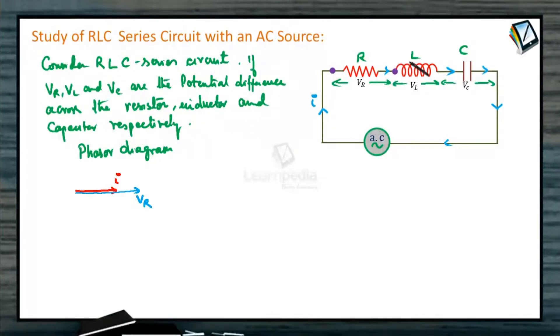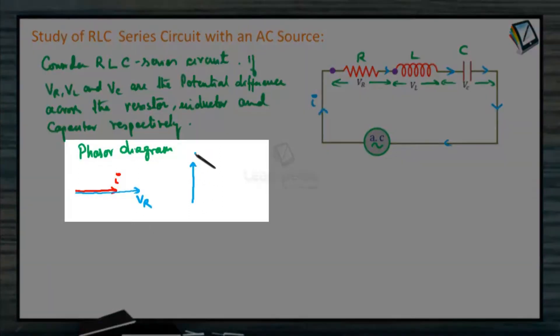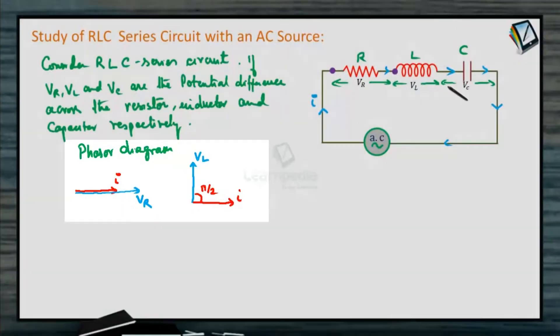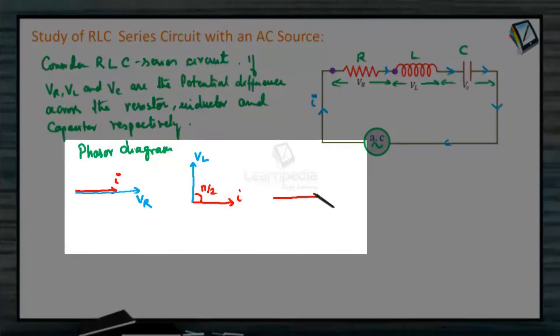Across inductor, voltage is ahead of current. So voltage will be in this direction, this is VL. Current will be in this direction. There is a phase angle. Voltage is ahead by pi by 2. Whereas across capacitor, if current is in this phase, the voltage will lag behind VC by a phase of pi by 2. This is individual resistance, inductor, capacitor circuit.